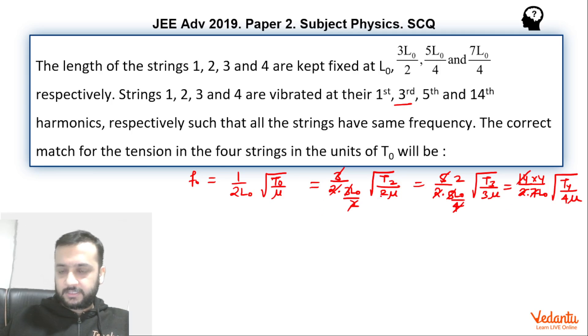Now if you see these two, mu and mu will be gone. We have to be careful while calculating. L0 and L0, we can strike L0 from everywhere. Mu also can be struck out from everywhere. Here root T0 is left and here 2 is left. So we can say 1 upon 2 into root T0 equals root T2 by 2.